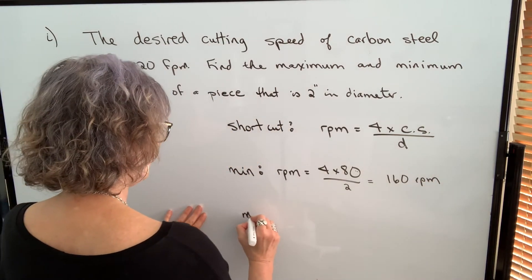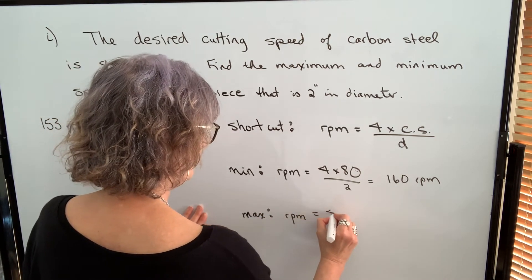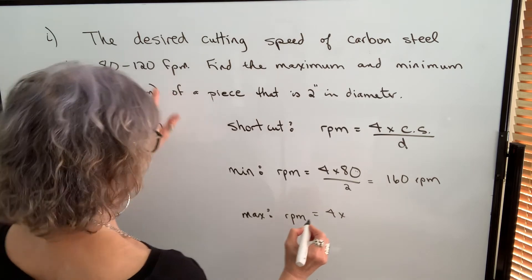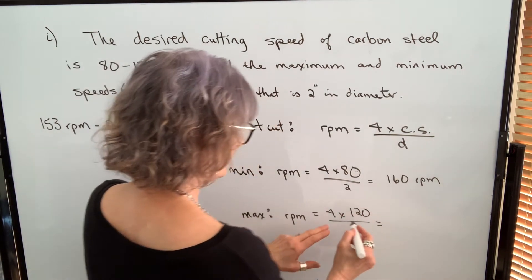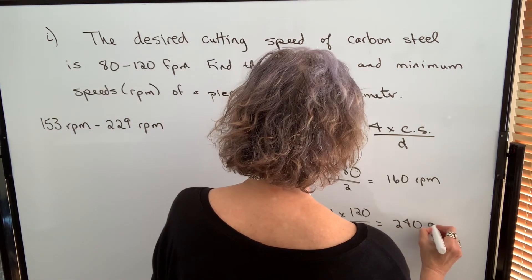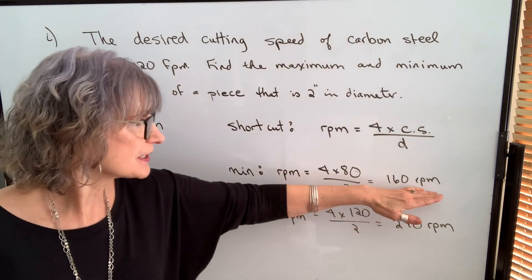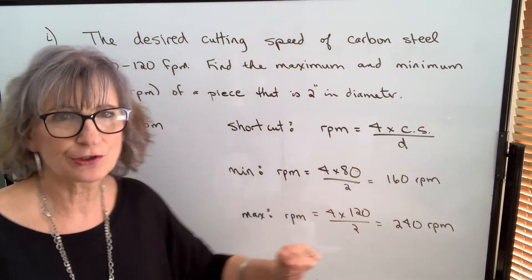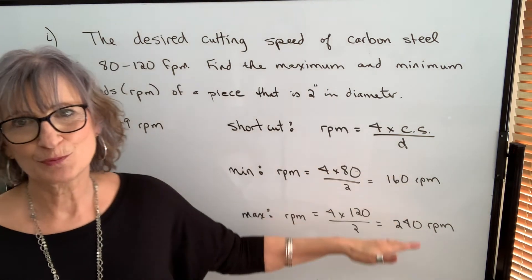And my maximum RPM will be 4 times 120, my cutting speed of 120, divided by 2. That's 480 divided by 2, so the answer is 240 RPM. So my range would be 160 RPM to 240 RPM, close enough to these values that this would be acceptable.